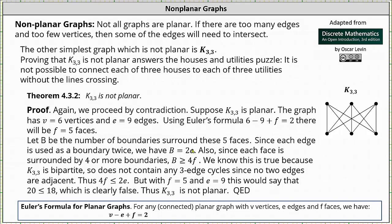Using the equation b equals 2e and the inequality b is greater than or equal to 4f, we have the inequality 4f must be less than or equal to 2e, but with f equals 5 and e equals 9, 4f is equal to 20 and 2e is equal to 18, which would say that 20 is less than or equal to 18, which is clearly false. Thus, K3,3 is not planar.